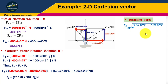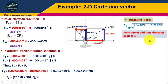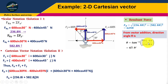However, we also have to calculate the direction angle. The direction angle theta can be calculated from the vector addition: theta equals tan inverse of 582.8 Newtons divided by 236.8 Newtons.